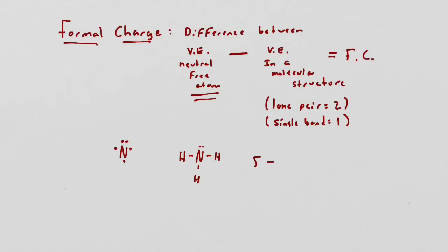When it gets in, let's say it's in ammonia NH3, we count. We have 5 to start with minus the number of valence electrons in a molecular structure. In this particular circumstance, we have one lone pair that counts as 2.